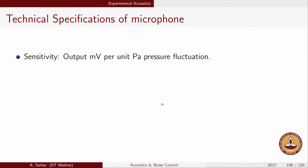Let us look at the technical specifications of a microphone. Like any other transducer, it essentially converts a physical quantity into a voltage. Sensitivity is this conversion ratio: for a unit Pascal of acoustic pressure amplitude, how many millivolts will be generated? The ratio of output voltage to input pressure — millivolts per Pascal — is the sensitivity.